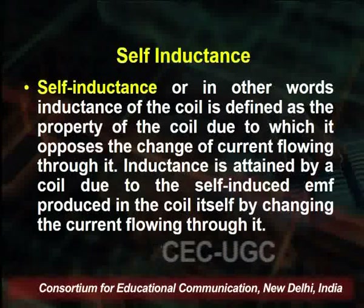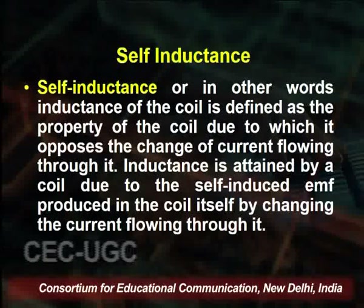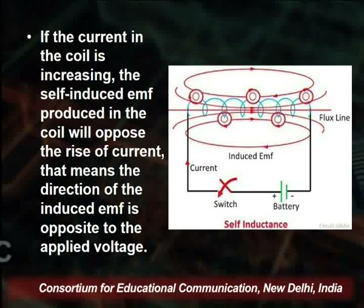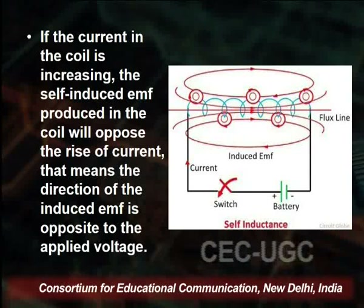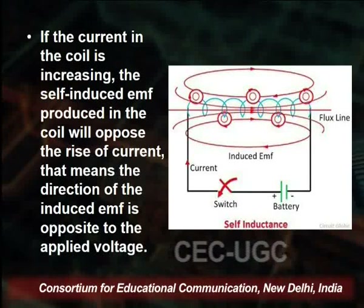The self-induced EMF is produced in the coil when current is passed through it. If the current in the coil increases, the self-induced EMF produced in the coil opposes the rise of the current. The direction of the induced EMF is opposite to the applied voltage. In the diagram, you can see the current is given to the coil, the induced EMF is generated, flux lines are produced, and the self-induced EMF opposes the rise of the current.